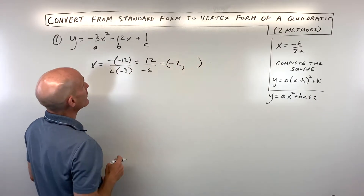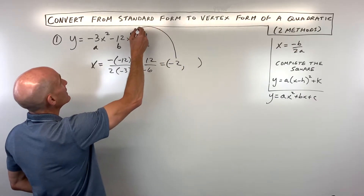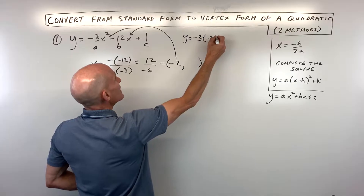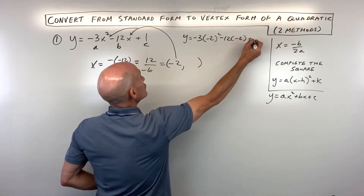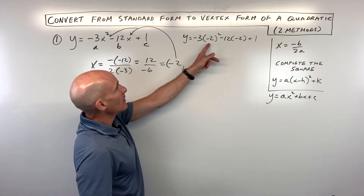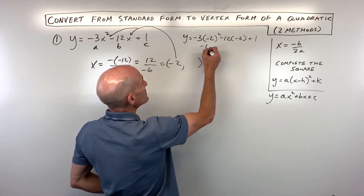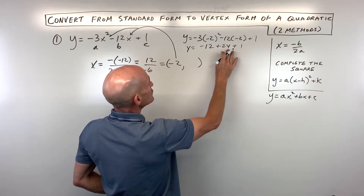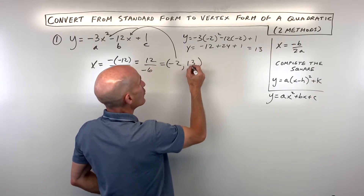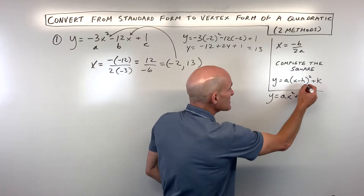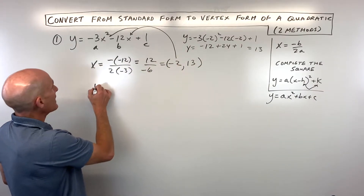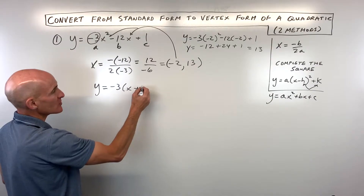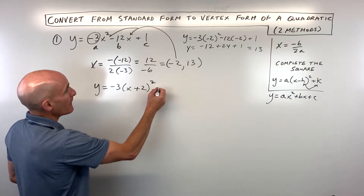This negative 2 is the x-coordinate of our vertex. To find the y-coordinate, we plug it back in for x and simplify. We have y equals negative 3 times negative 2 squared minus 12 times negative 2 plus 1. Remember to follow order of operations: negative 2 squared is 4, times negative 3 is negative 12, and negative 12 times negative 2 is positive 24. That comes out to positive 12 plus 1, which is 13 — that's our y-coordinate. So we have y equals negative 3 times x plus 2 squared plus 13.